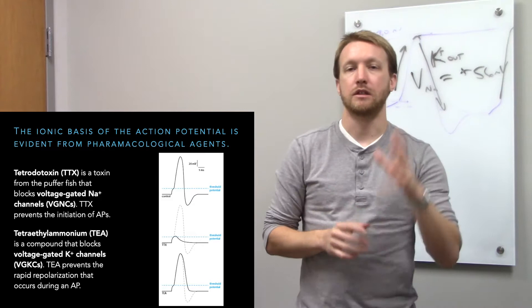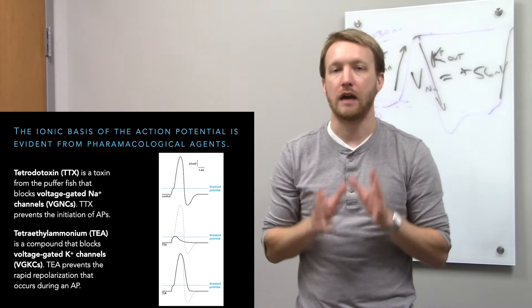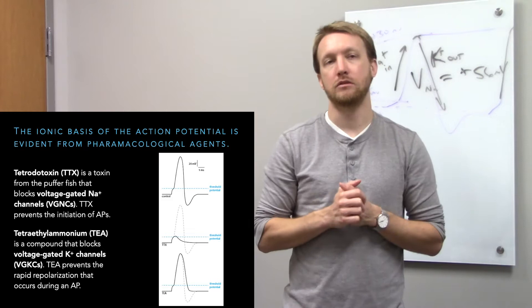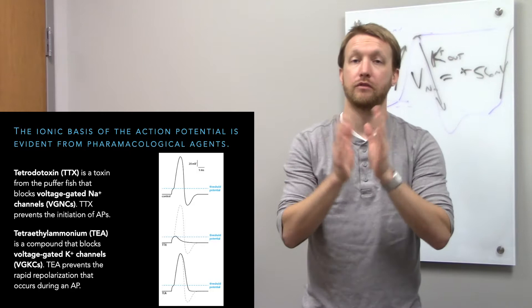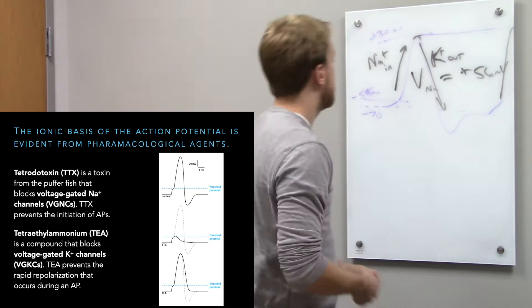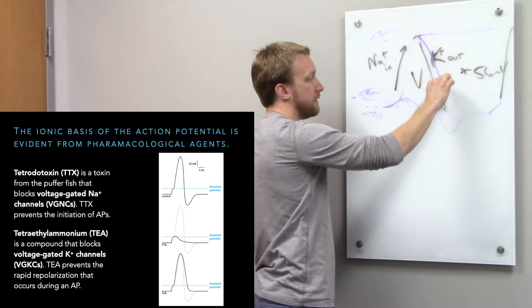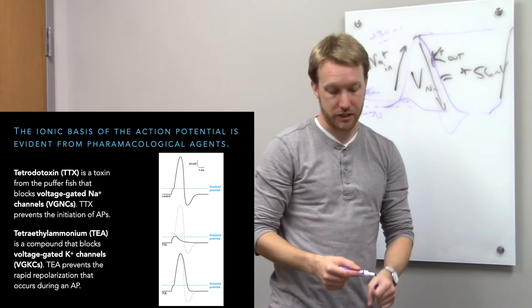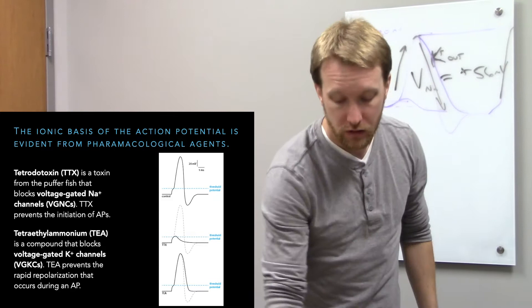Tetrodotoxin blocks voltage-gated sodium channels. Comparing action potentials with and without TTX shows that even getting above threshold can't produce a spike when sodium channels are blocked. Tetraethylammonium blocks voltage-gated potassium channels, which widens the action potential. Blocking sodium means no action potential; blocking potassium means slower repolarization and no after hyperpolarization. This tells us we see an initial sodium current followed by a delayed potassium current — that's all an action potential is.